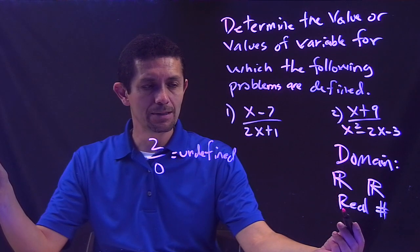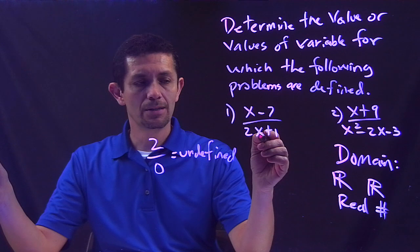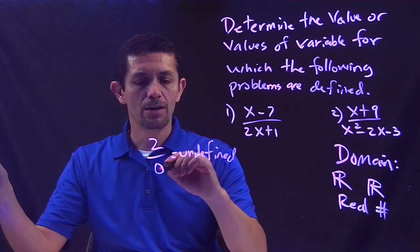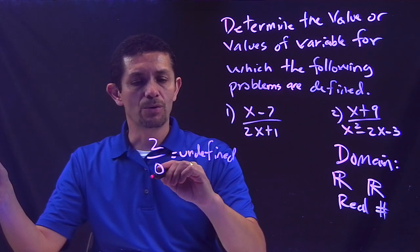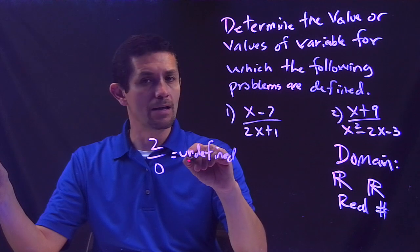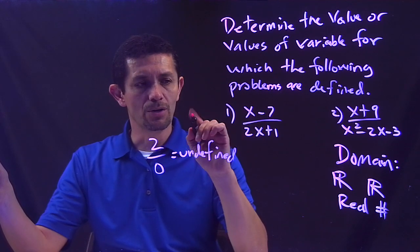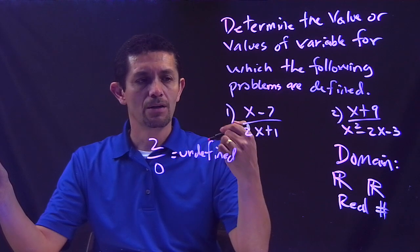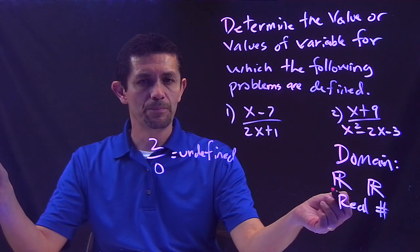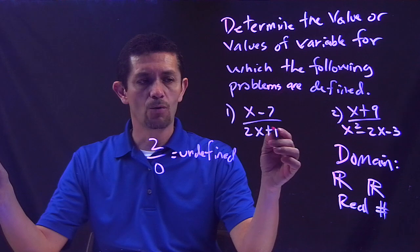So my domain is always all the real numbers except any value of X that will make this denominator equal to 0. The reason is because that will be undefined and I don't want my function to be undefined. So how do we find the domain? We start with all real numbers.